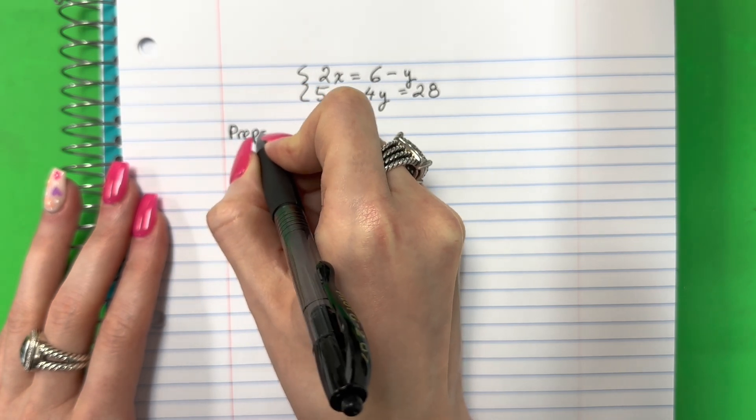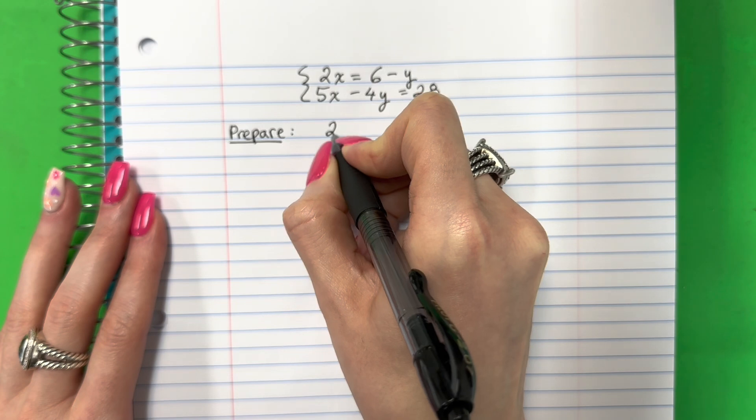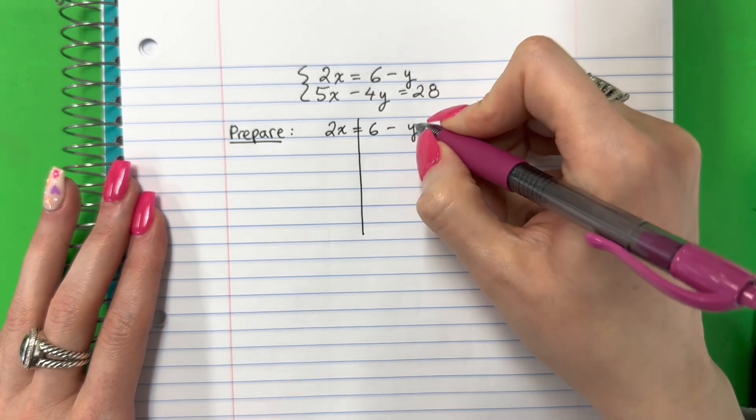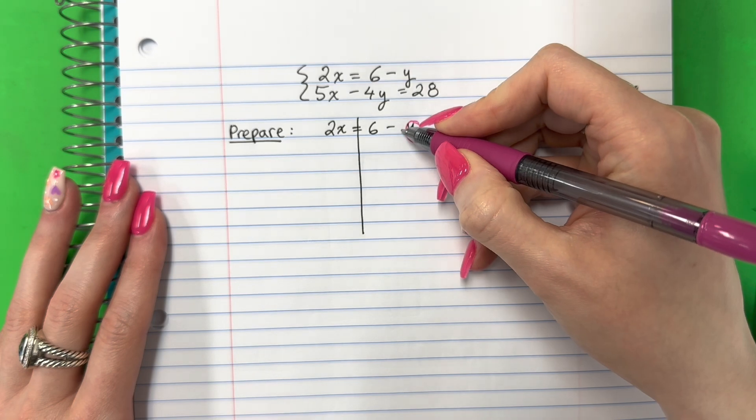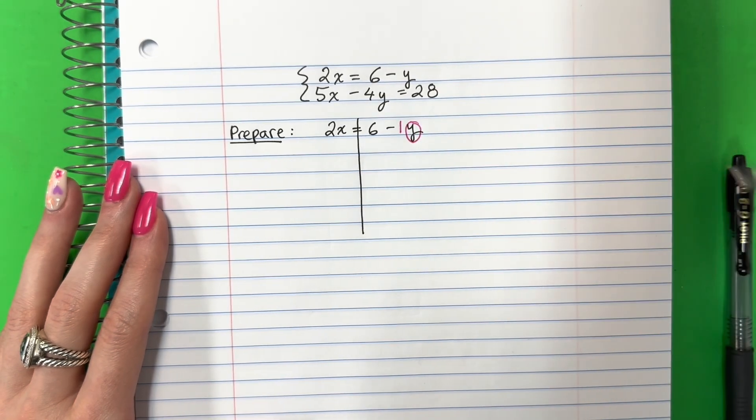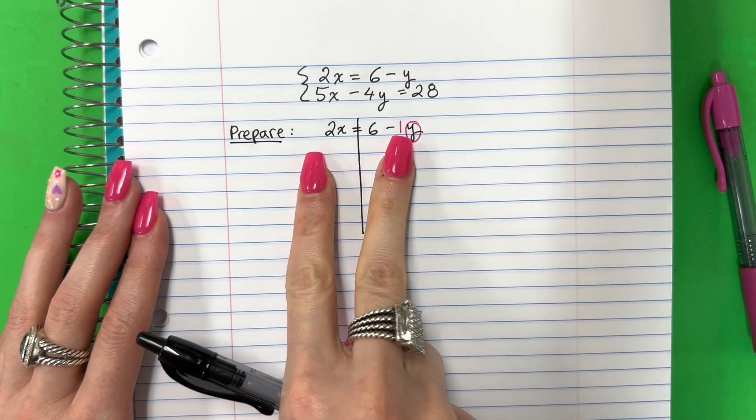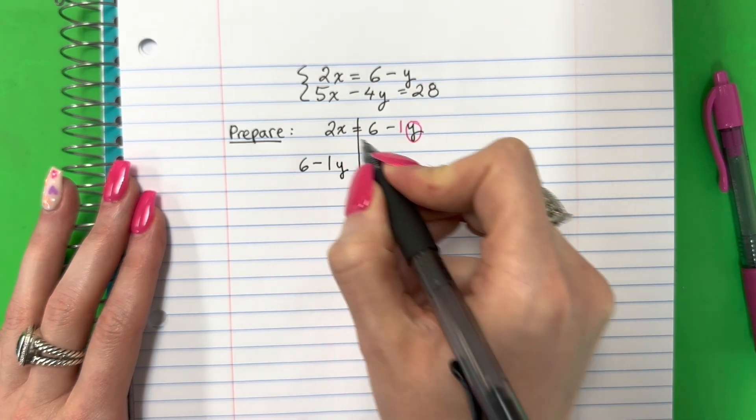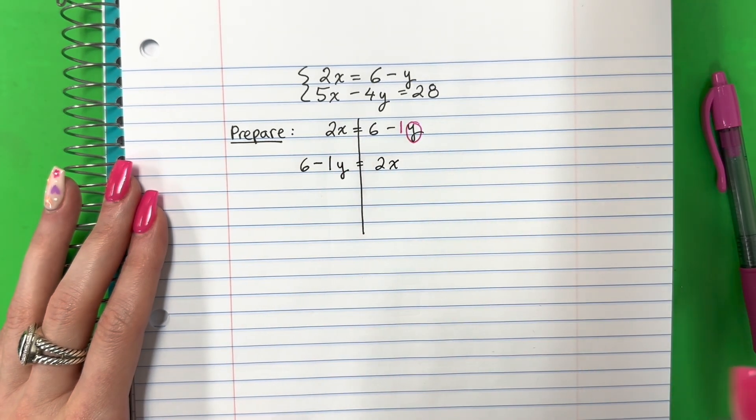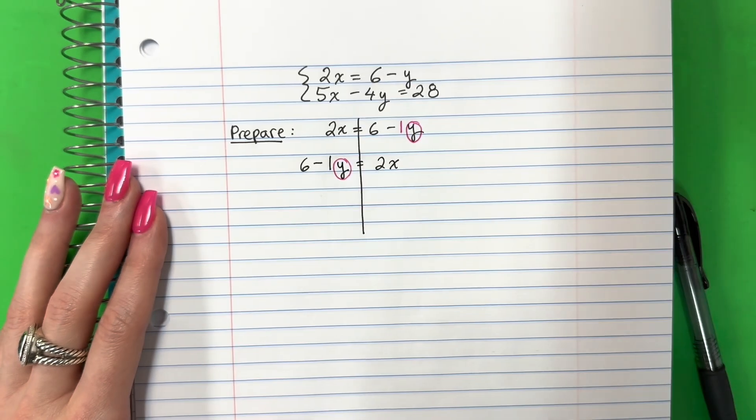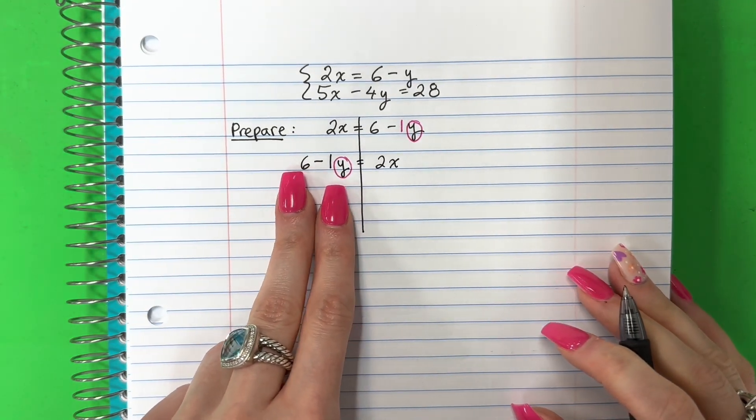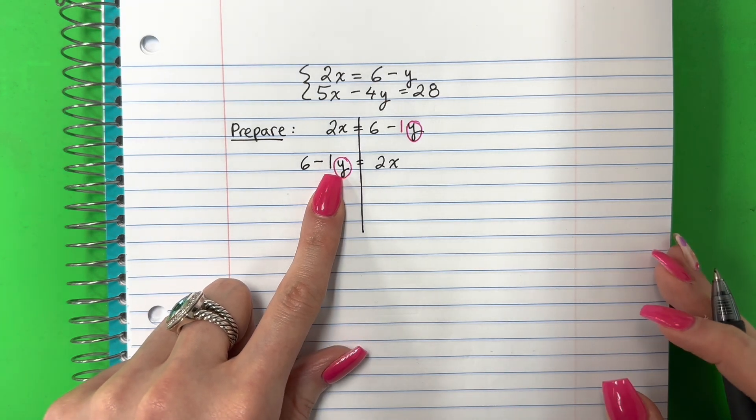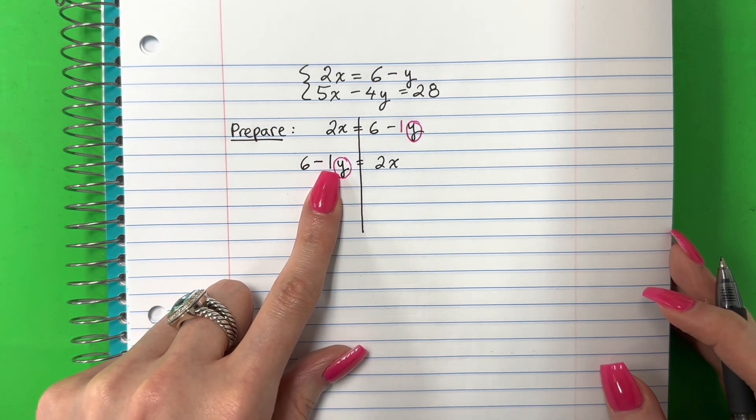So first we're going to prepare. Primero vamos a preparar. Copy. 2x equals 6 minus y. I'm going to put my line. Voy a poner mi línea. Remember, recuerda, I want this letter alone. Quiero esta letra sola. If there's no number here, I'm going to put a 1. Si no hay número, es 1. Es negative 1. Es negativo 1. And let's begin. First, I'm going to go ahead and switch this. Primero voy a cambiar estos. So I'm going to put here 6 minus 1y. Copy. Equals 2x.